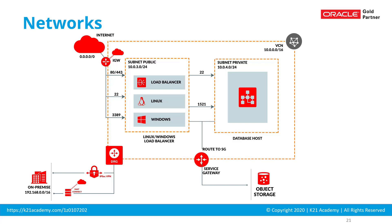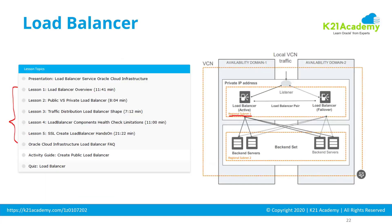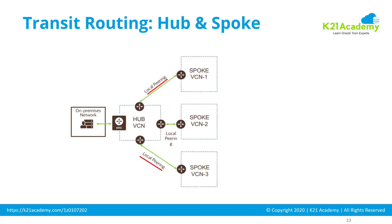There are also advanced networking topics. You should learn about load balancers, which take traffic from clients and distribute it to multiple backend servers for high availability. For advanced networking, you should know about transit routing — where you have multiple networks on Oracle Cloud connected with on-premise using a hub-and-spoke model. There is also local peering, which connects different VCNs within a single region, and remote peering, which connects VCNs across regions.